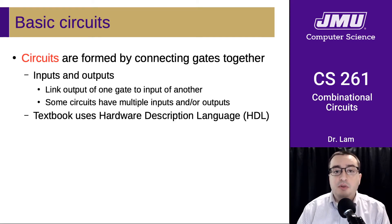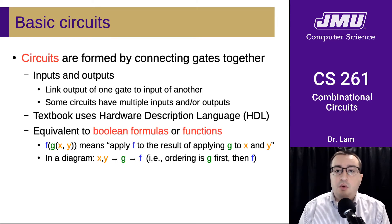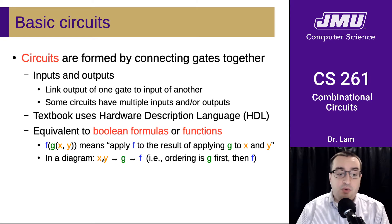The textbook uses something called HDL to describe these things. It's equivalent to using a Boolean formula or a function. So there are a couple of different ways of writing these things. You're hopefully familiar with the function syntax from math and from programming. So f of g of xy means apply f to the result of applying g to x and y. And so the way you draw this in a circuit diagram is you have x and y going into g and then the result going into f.